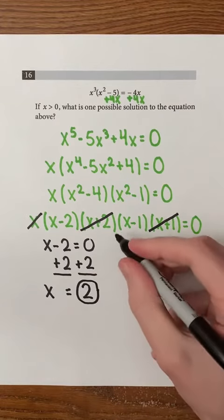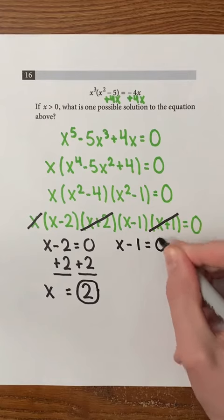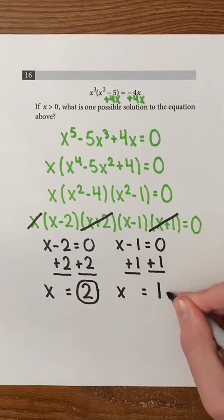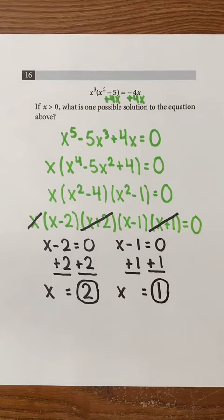And if we also set x minus 1 equal to 0 and add 1 to both sides of the equation, 1 is another possible solution that's greater than 0. So you can choose 2 or 1 as your answer.